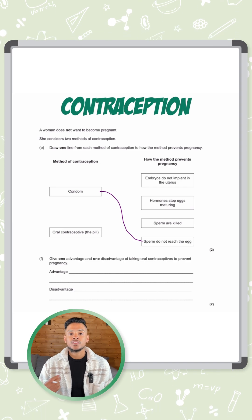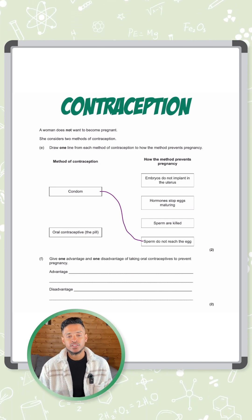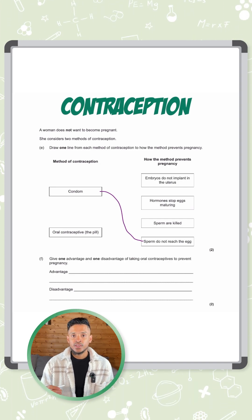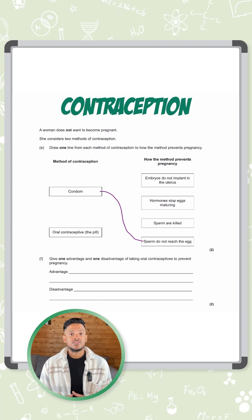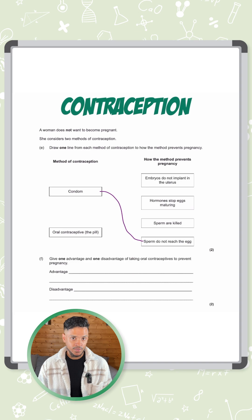So what the pill does is it contains hormones, oestrogen and progesterone. The oestrogen causes the woman to have a very high oestrogen level. High oestrogen levels is not good if you want to get pregnant.